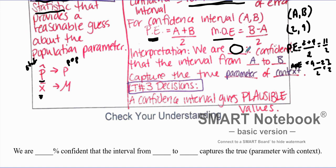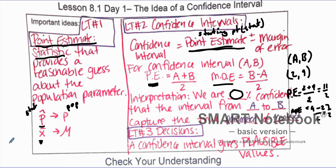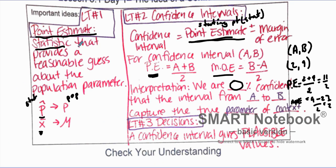A confidence interval does not guarantee that the population value is between those numbers — there's still a percentage chance it won't be. The interval gives plausible values; for example, five, six, seven, and eight are all plausible values in that range. That is what a confidence interval is, and we'll go through another problem to check your understanding in the next video.